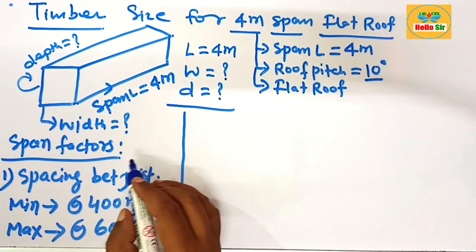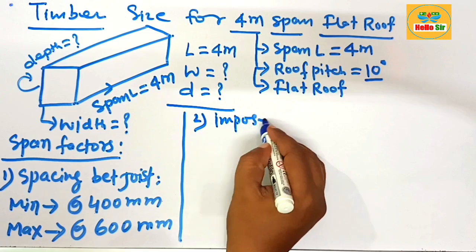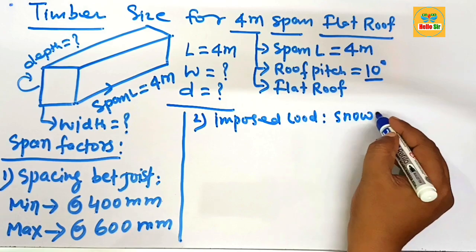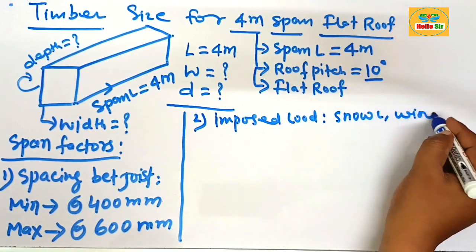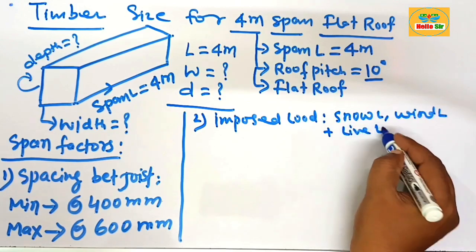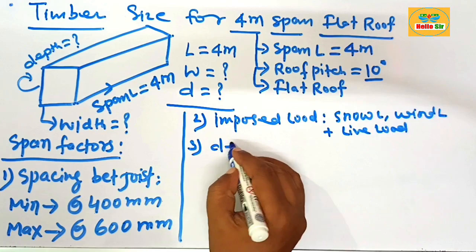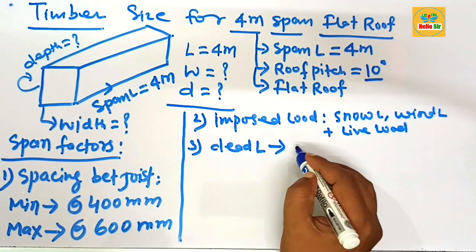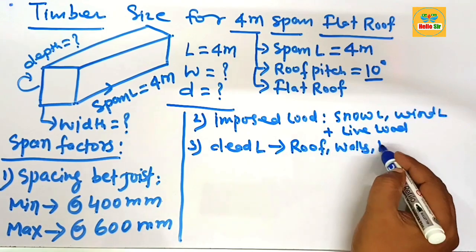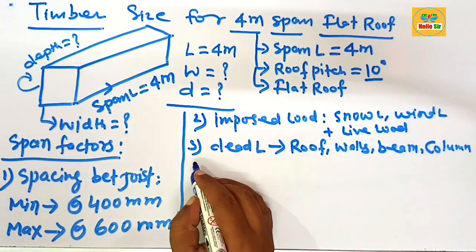The second major factor is the imposed load. Imposed load contains snow load, wind load, and live load. The third major factor is the dead load of the structure — the load of the roof, walls, beams, and columns. This is the dead load of a structure.